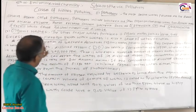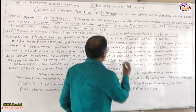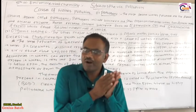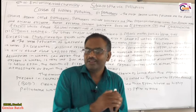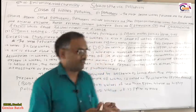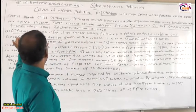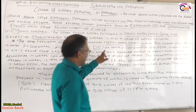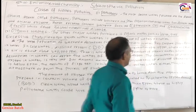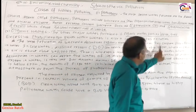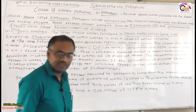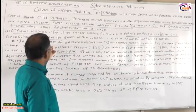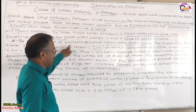A large population of bacteria decomposes the organic matter present in the water. Bacteria such as E. coli, Streptococcus fecalis, and others decompose leaves or grass in the water. In doing so, they consume the oxygen dissolved in the water.